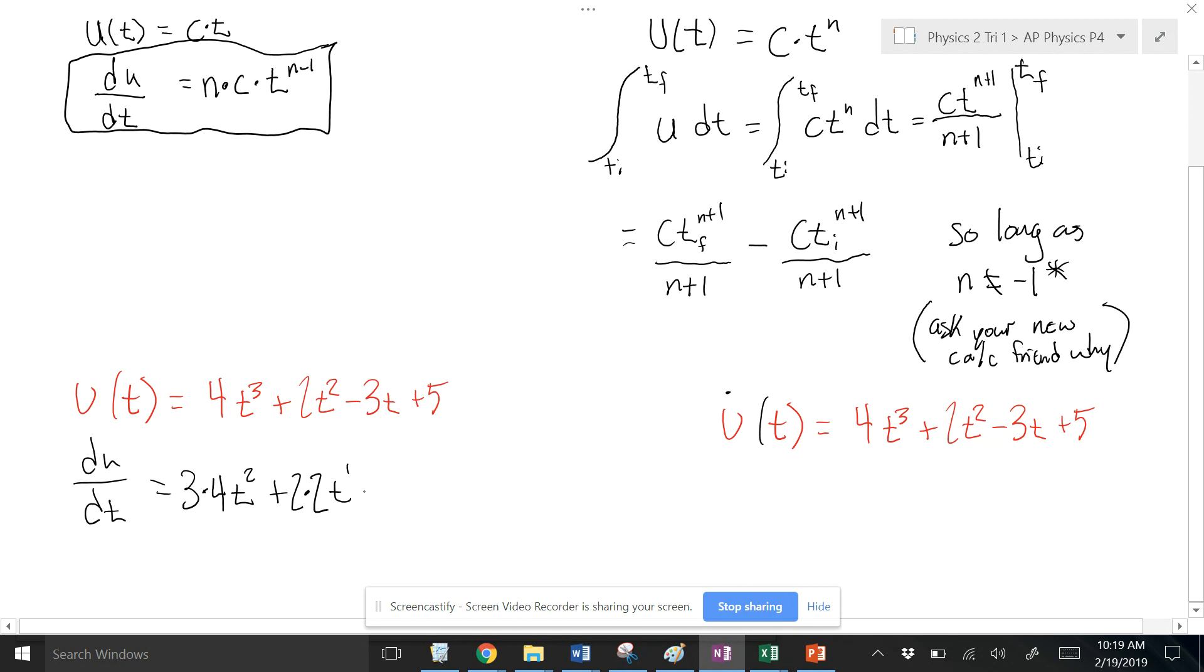And then this next one, you can think of this as plus minus 3t to the first. So I'm going to pull down the exponent 1, and that's going to make this be 1 times minus 3. And then I'm going to reduce this by 1. 1 minus 1 is 0. Anything to the 0th power is 1. And so this thing is going to become negative 3.